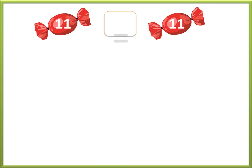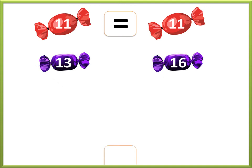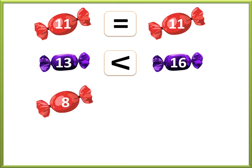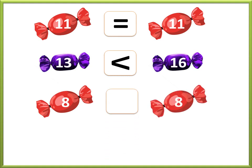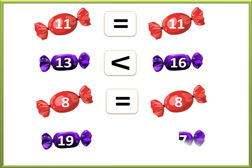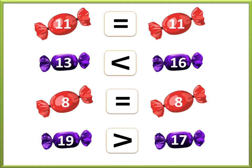Eleven. Eleven. We use the equal to sign because we have the same number. Thirteen. Sixteen. We use the less than sign because 13 is less than 16. Eight. Eight. We use the equal to sign because we have the same number. Nineteen. Seventeen. We use the greater than sign because 19 is greater than 17.